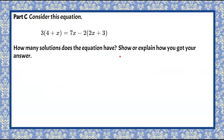Let's move on to Part C. We're asked to consider this equation: 3 multiplied by the quantity 4 plus X is equal to 7X subtract 2 multiplied by the quantity 2X plus 3. We're asked how many solutions does the equation have, and we need to show or explain how we get our answer. Pause the video, do your best work, and then come back to see my solution.